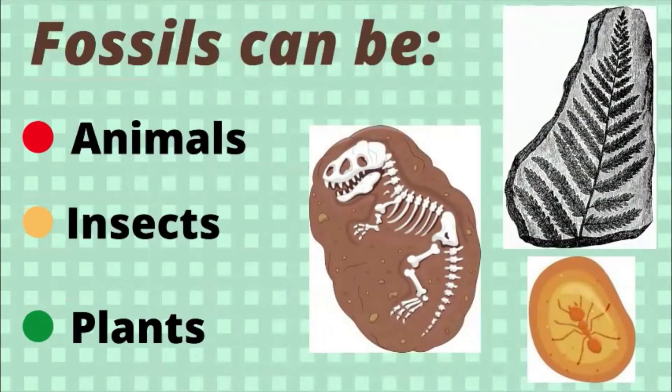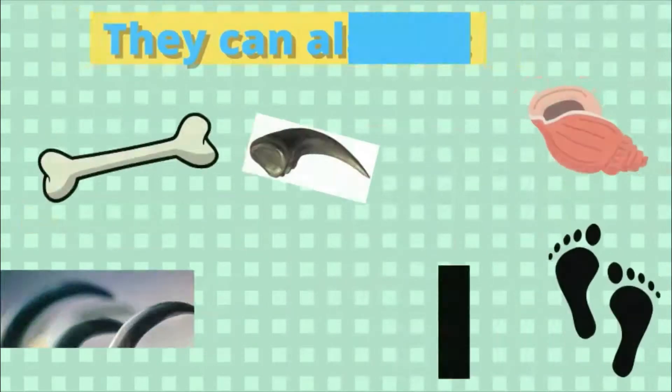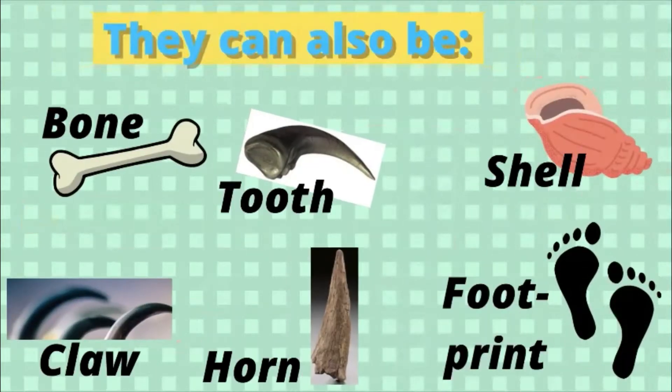Fossils can be animals, insects, or plants. They can also be a bone, claw, tooth, horn, shell, or footprint.